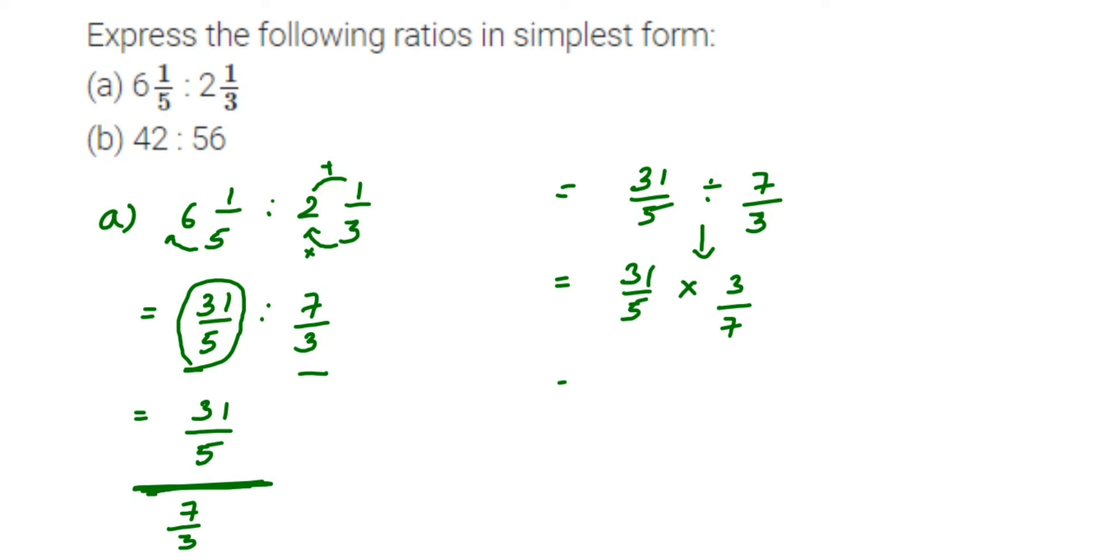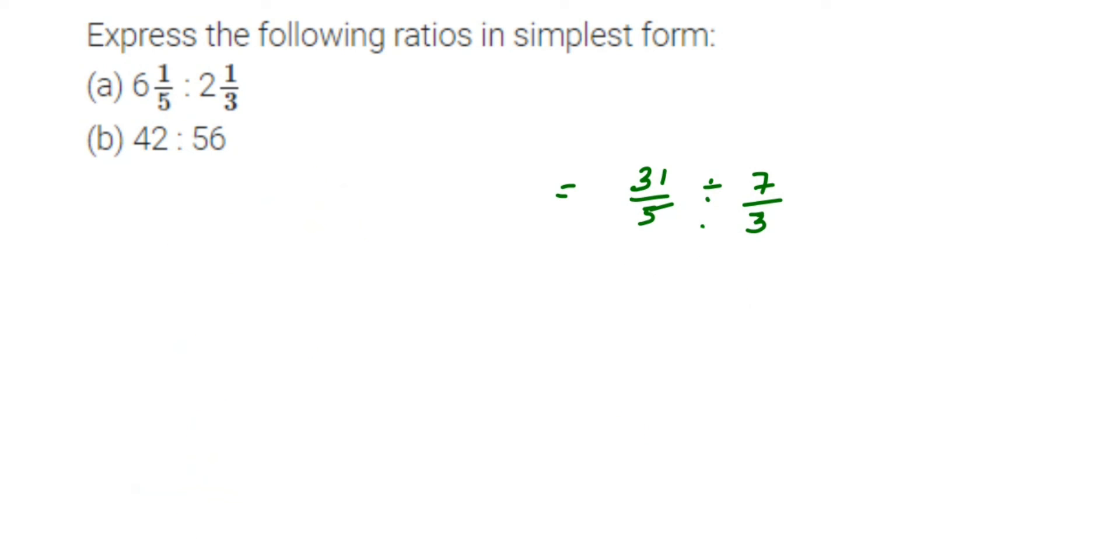Multiply the numerators: 31 × 3 = 93. Multiply the denominators: 5 × 7 = 35. So we get 93/35, which is the simplest form. We cannot reduce this further. Now for the second question.